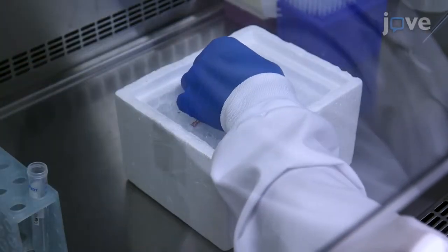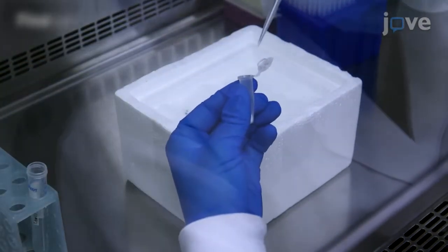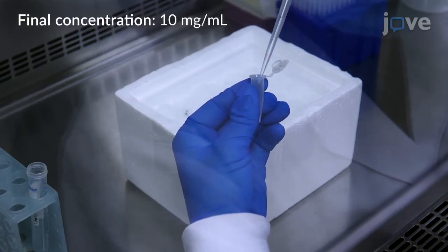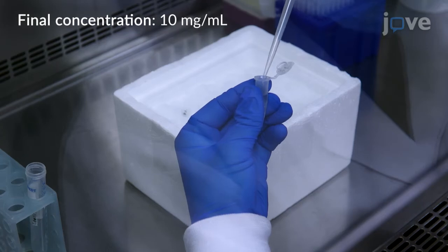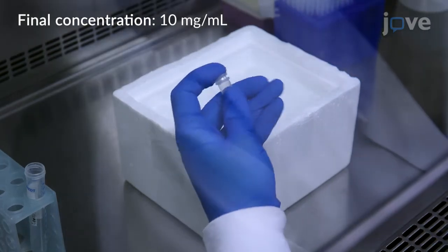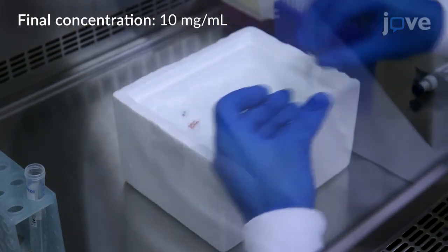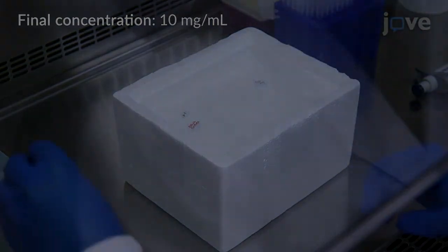Working in the cell culture hood, add 700 microliters of 0.9% saline solution to a 1.5 milliliter microcentrifuge tube containing 7 mg of powdered fibrinogen.